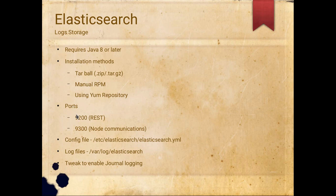When you start the Elasticsearch service, it's going to listen on ports 9200 and 9300. The config file is in the /etc/elasticsearch directory — it's a YAML file. YAML stands for Yet Another Markup Language. The log file is at /var/log/elasticsearch, that's where you will find the logs. It will also log to the journal, so you can use the journalctl command to look at the logs.